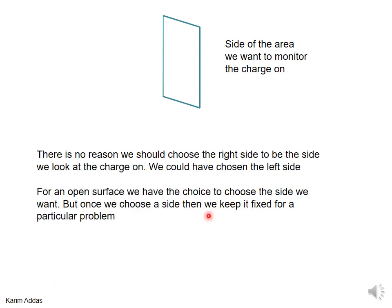To summarize: if you want to talk about current, you need to define an area and choose a side to monitor what's happening to the charge on that side due to charges going through the surface. You could choose the left side instead of the right — that's why you have to make this choice before you solve the problem. Later on, we'll see how this choice can be written down mathematically, and we'll see the correspondence between this intuitive approach and the more mathematical way.